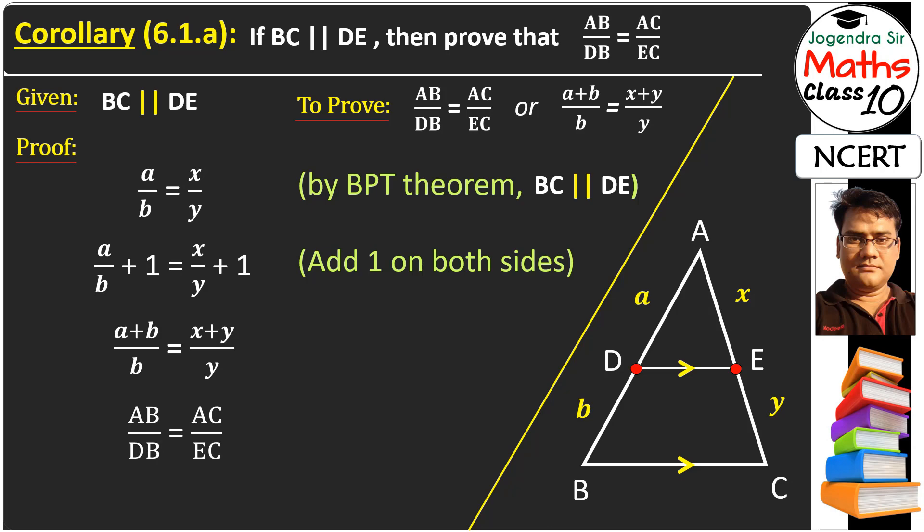B and Y are DB and EC. This is how we prove that in any triangle, if there is a parallel line, then the two sides will be divided by both lines such that the ratio will be one side full upon its lower part, and the other side full upon its lower part. That is our first corollary.